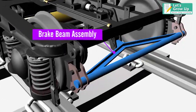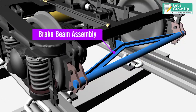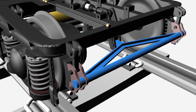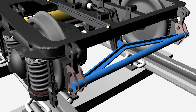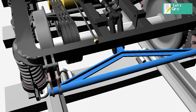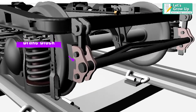Brake Beam Assembly: The ICF bogey uses two types of brake beams — 13 tons and 16 tons. It is made from steel pipes and welded at the ends. The brake beam has a typical isosceles triangle shape. The brake head is fixed at the end of the brake beam, along with the brake block.